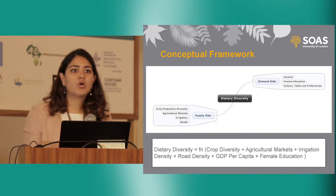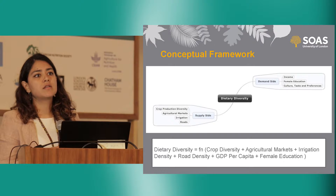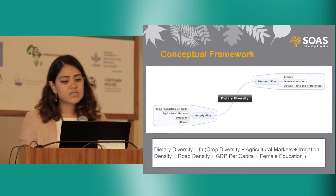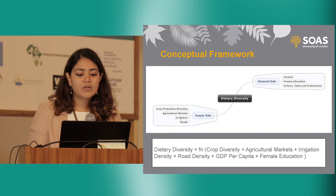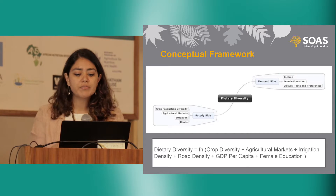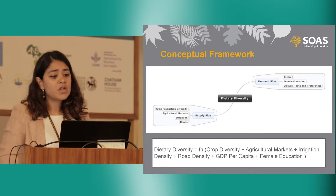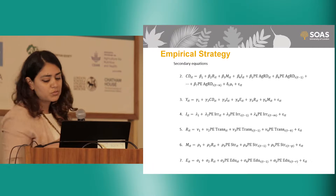I'll briefly talk about the conceptual framework, but in the interest of time I won't go into all seven equations. I'll focus more on the first equation of the model, which is how I'm modeling dietary diversity at state level. It's a function of crop diversity, agriculture markets, irrigation density, road density, GDP per capita — which is essentially the income pathway — and female education. There are other equations, which I'm not explaining right now.